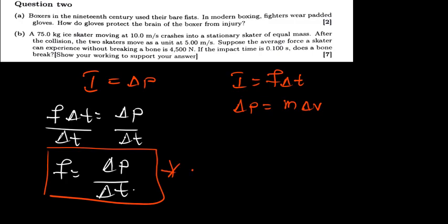One thing we need to understand is that the question is, boxers in the 19th century used their bare fist. By then they were not using the gloves. But now in this era, we are using gloves. So they are saying that how do gloves protect the brain of the boxer from injury? So now it will take time. One thing I want you to understand from this formula here is that...